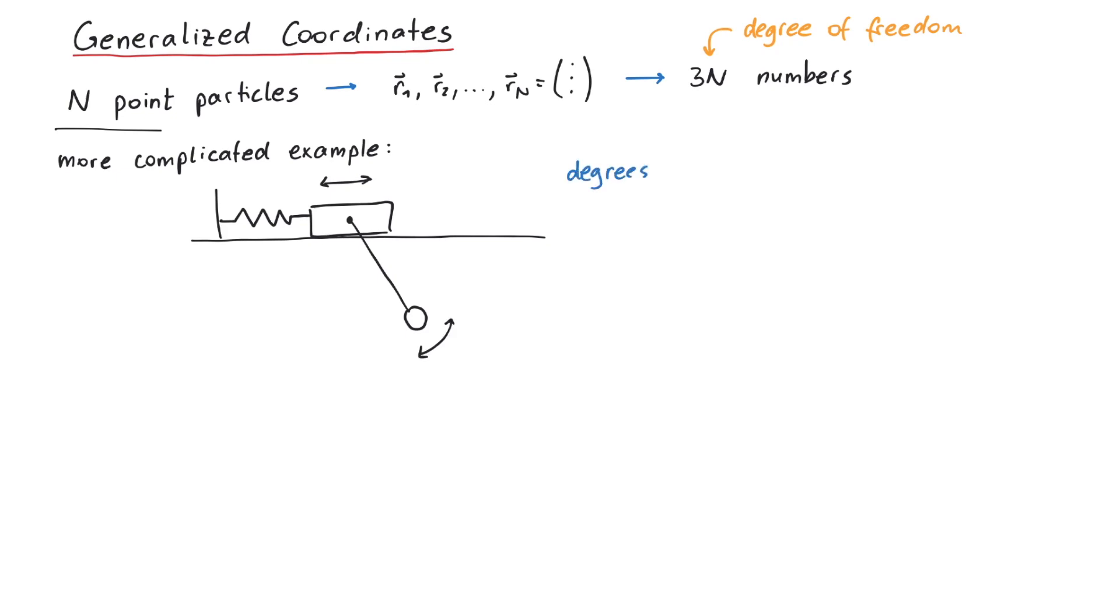Now what might be the degree of freedom in this system? A naive ansatz would be to assign x and y coordinates to both the block and the pendulum, thus having 4 degrees of freedom.